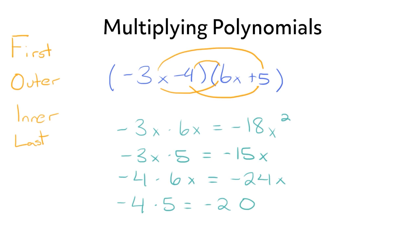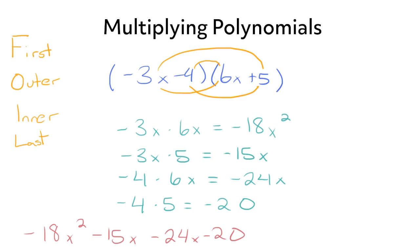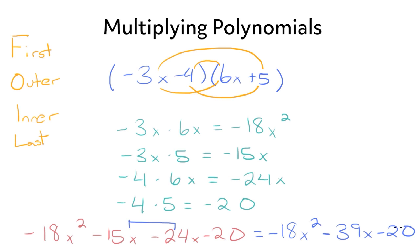So now all we have to do is add these terms together: negative 18x squared minus 15x minus 24x minus 20. The last thing we need to do is combine our like terms. We'll leave negative 18x squared the same. Negative 15x minus 24x is negative 39x, and then minus 20. So that's our final answer.